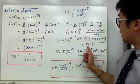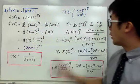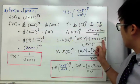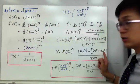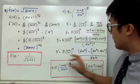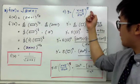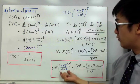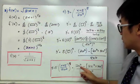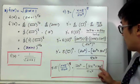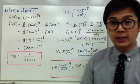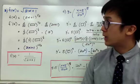Simplifying the numerator gives 2x³ − 6x³ − 30x², all over 4x⁶. Putting it all together, the derivative of the full expression is 5 times ((x+5)/(2x³))⁴ times (2x³ − (6x³+30x²)) / (4x⁶). That is how we use the chain rule in finding the derivative of a composite function.